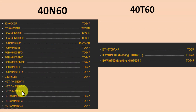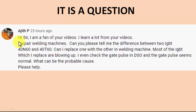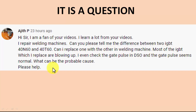This is a question from one of my viewers who repairs welding machines: 'Can you tell me the difference between the IGBT 40N60 and 40T60? Can I replace one with the other in a welding machine? Most of the time the IGBT I replace keeps blowing up. I even checked the gate pulse on the oscilloscope and it is good — what is the probable cause of damage?'